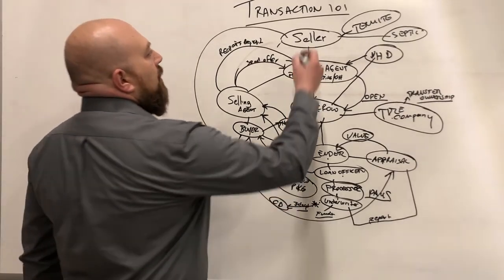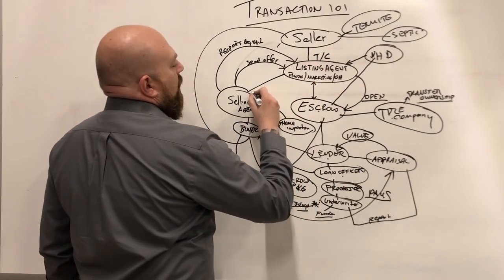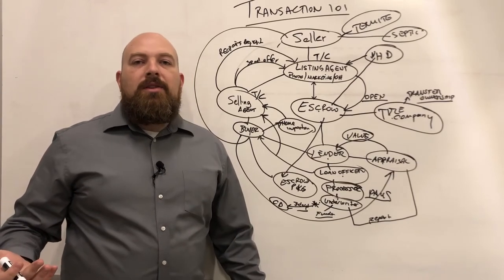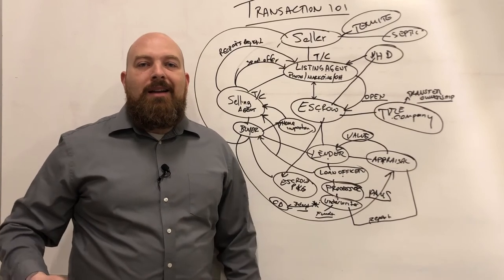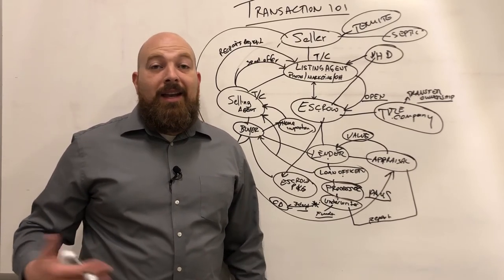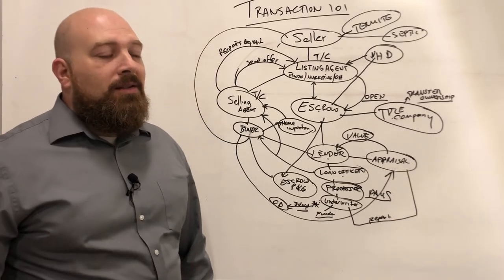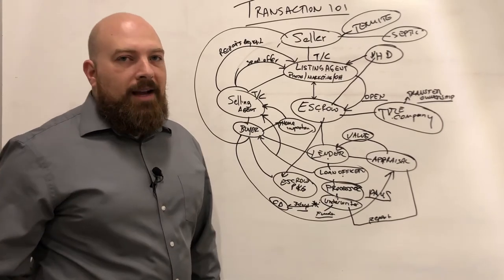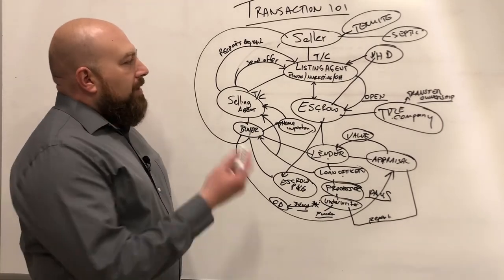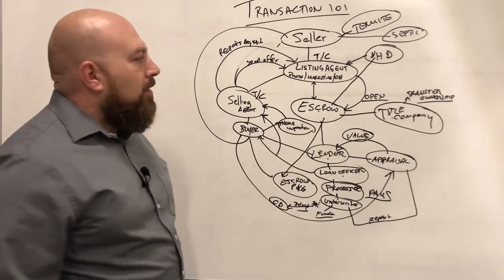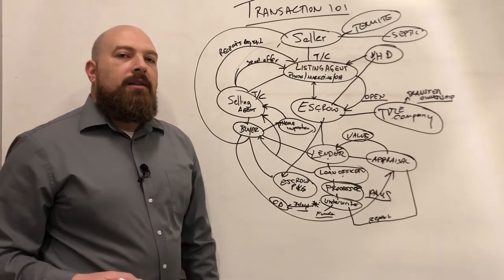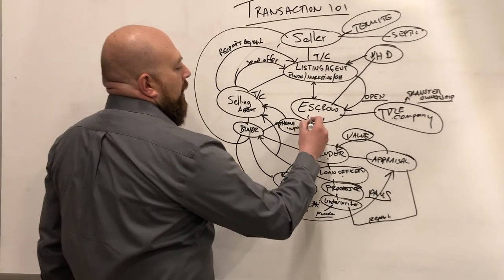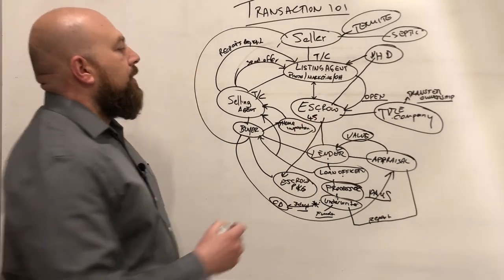Other people involved: both the listing agent and selling agent have what's called a TC — a transaction coordinator. New agents and veteran agents, please make sure your TCs are copied on every email, because that's how they communicate with the other side. Some agents don't do this — don't form those bad habits. Your basic escrow time frame right now is 45 days to close escrow.